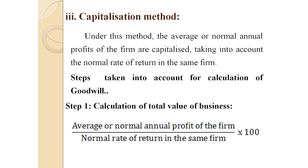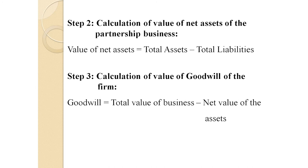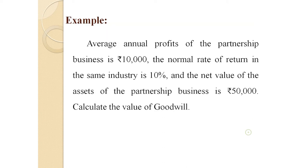The third method is the Capitalization Method. Under this method, the average or normal annual profit of the firm is capitalized taking into account the normal rate of return in the same industry. Step one: calculate total value of the business using the formula — Average/Normal Annual Profit ÷ Normal Rate of Return × 100. Step two: calculate net asset value = Total Assets − Total Liabilities. Step three: Goodwill = Total Value of Business − Net Value of Assets. Example: average annual profit = ₹10,000; normal rate of return = 10%; net value of assets = ₹50,000.